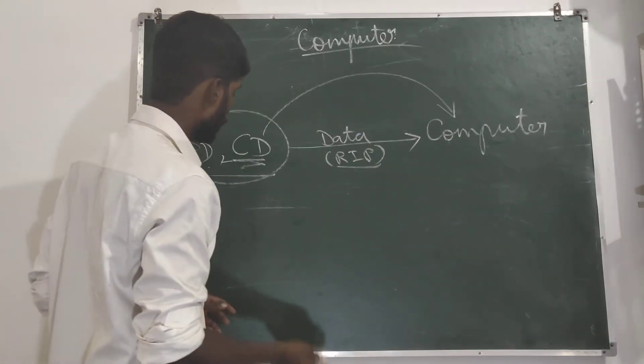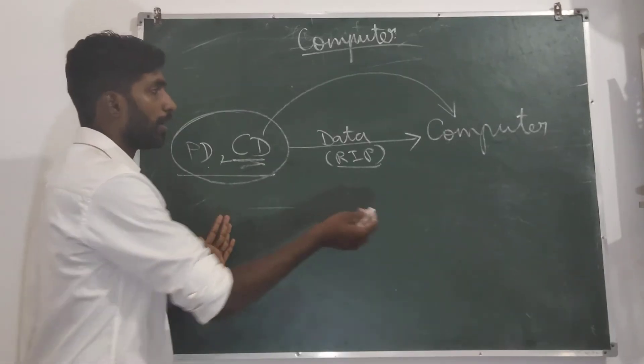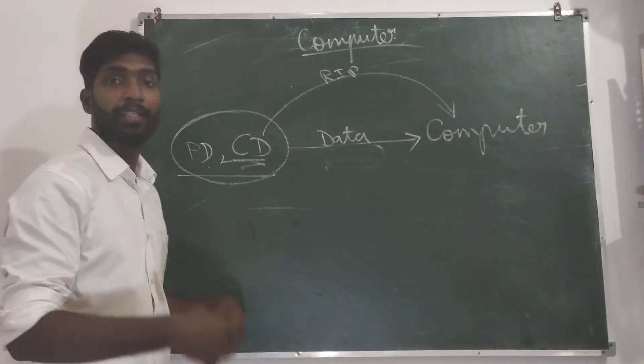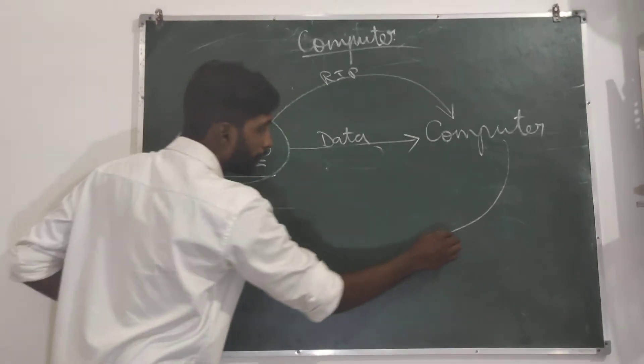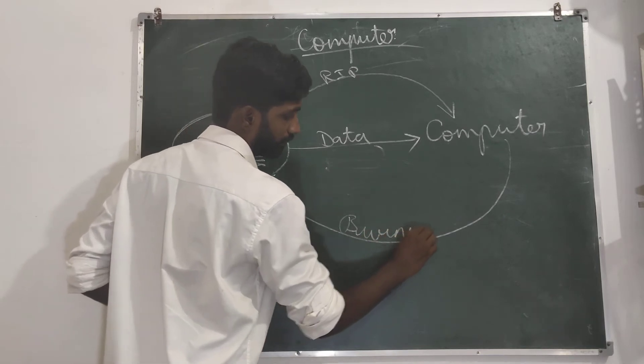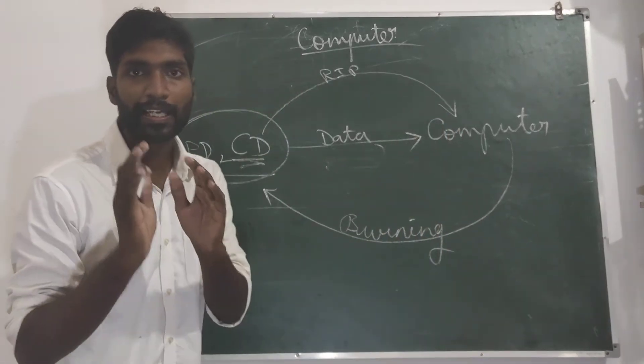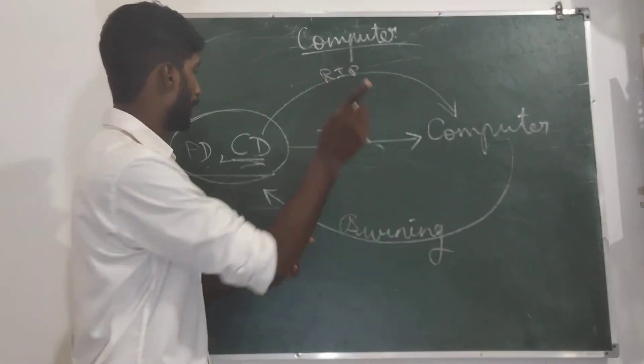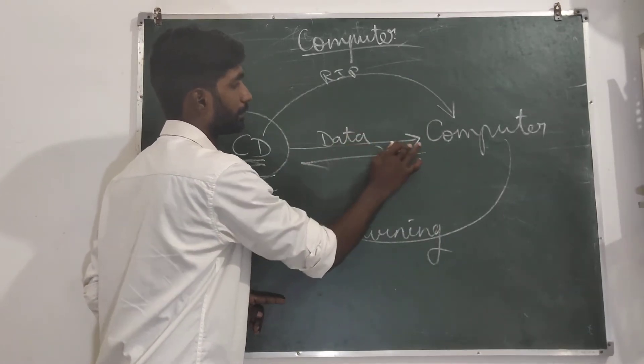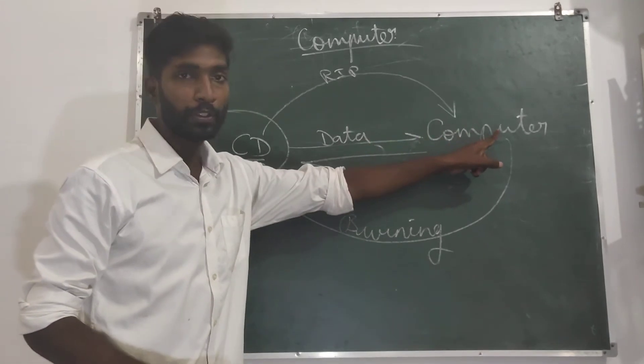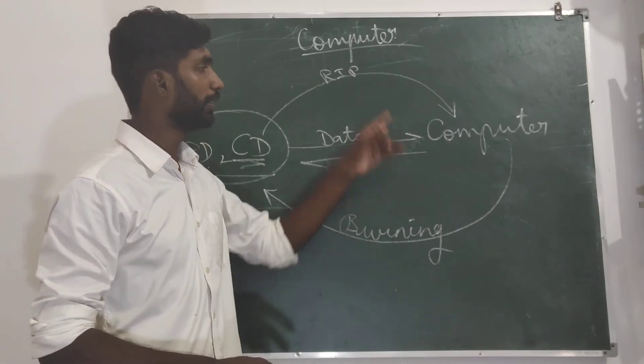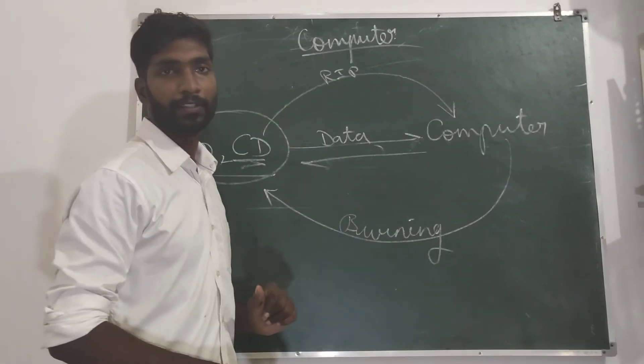And then what does burning mean? Opposite of this. Now copying data from computer to CD is called burning. Only this is an important thing you should know. Copying data from CD to computer is called rip, and copying data from computer to CD is called burning. Only this is a concept you should know in this chapter and this is very very important.